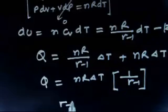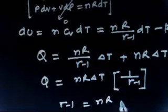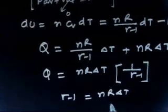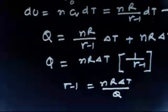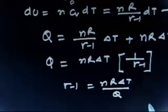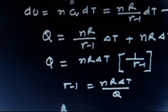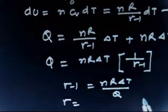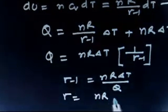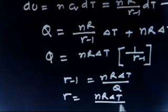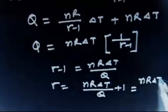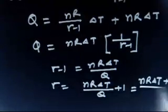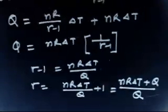So from here you can write gamma minus 1 equals NR·dT by Q. Then adding 1 to both sides gives gamma equals NR·dT/Q plus 1, which simplifies to (NR·delta T plus Q) by Q. So this is the value of gamma.